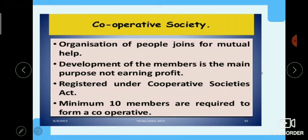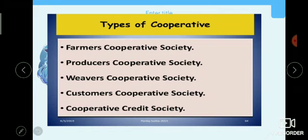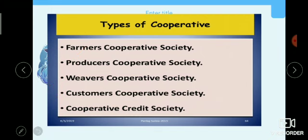The next topic is cooperative society — an organization formed by mutual understanding with no owner and no hierarchy. A minimum of 10 members join together, invest a fixed amount, and register under the Cooperative Society Act. It works for the welfare of members, not for profit. Types include: farmers cooperative society, producer cooperative society, weaver cooperative society, customers cooperative society, and cooperative credit society, which provides loans and funding only to its members.